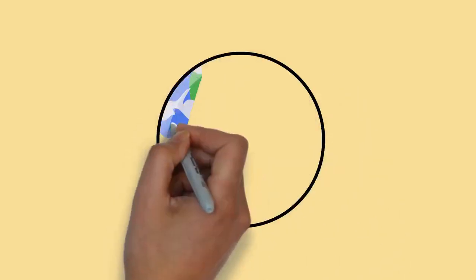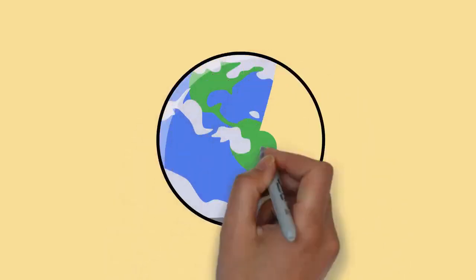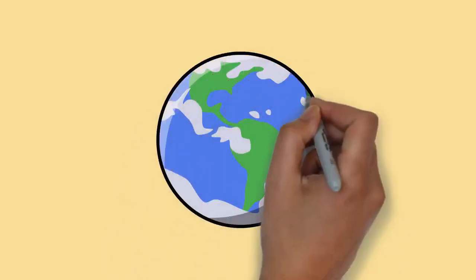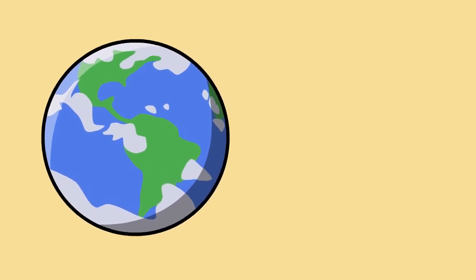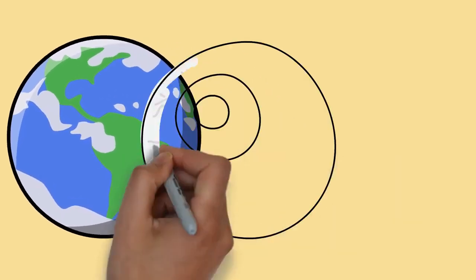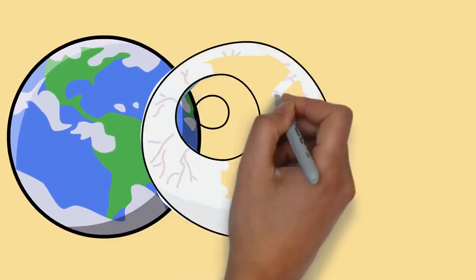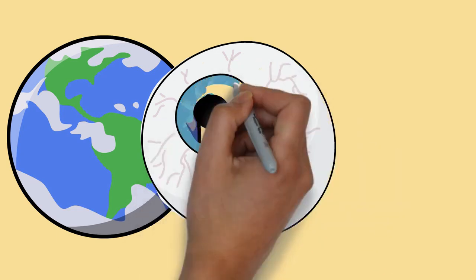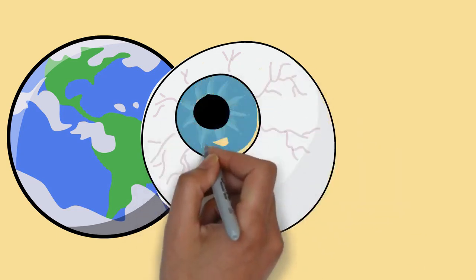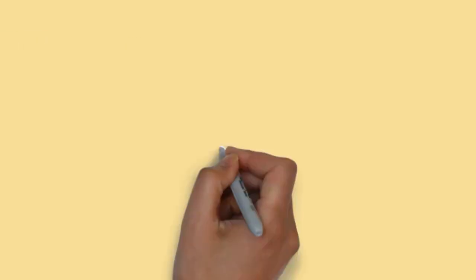The human eye is a sensory organ, part of the sensory nervous system, that reacts to visible light and allows humans to use visual information for various purposes including seeing things, keeping balance, and maintaining circadian rhythm. The eye can be considered as a living optical device.